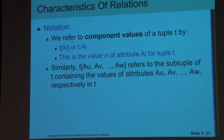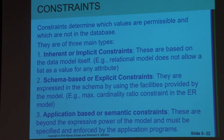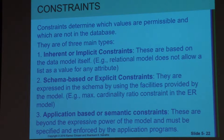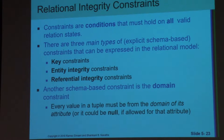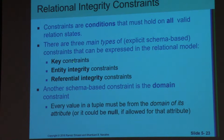As we discussed at the beginning of the semester, today I am going to use slides because I am in a hurry to catch up. Any model has constraints, rules, or conditions. There are different types of constraints, but we can define three major constraints used in the relational model: the key constraint, the entity integrity constraint, and the referential integrity constraint.